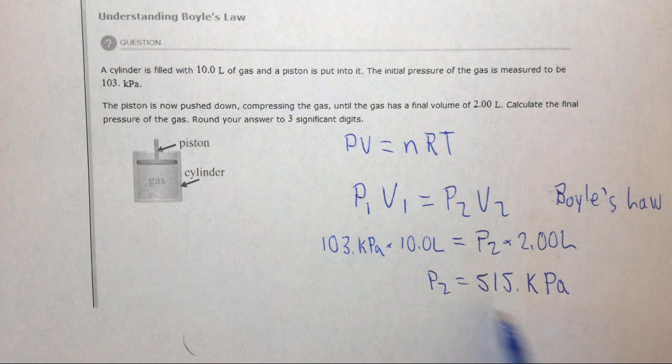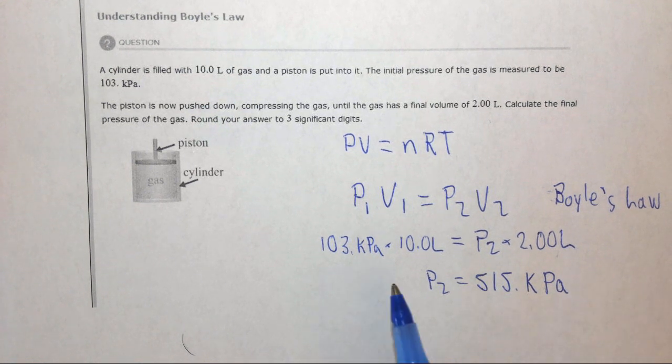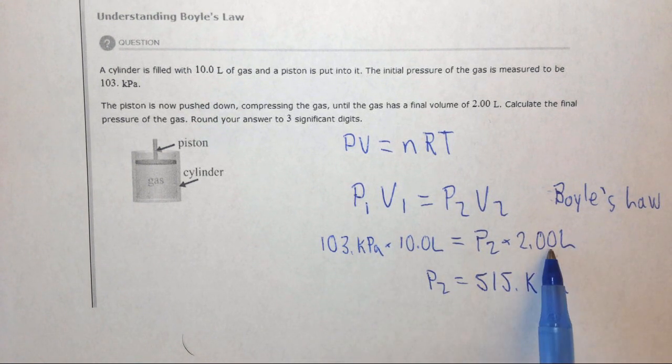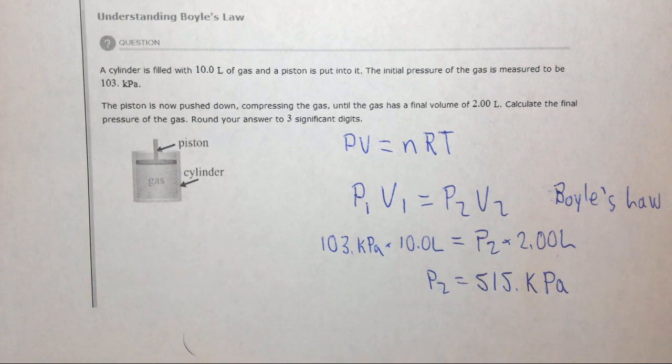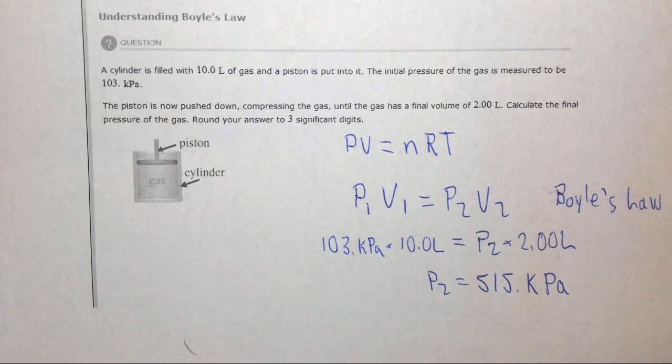This is the final pressure. Notice that the volume went down five times from 10 to 2, so the pressure went up five times, which is 103 times 5, or 515 kilopascals.